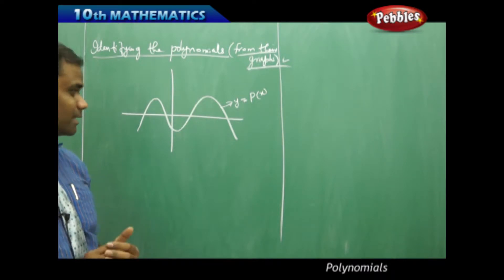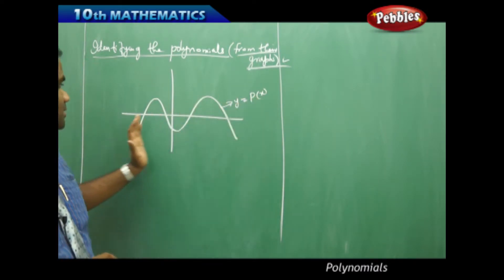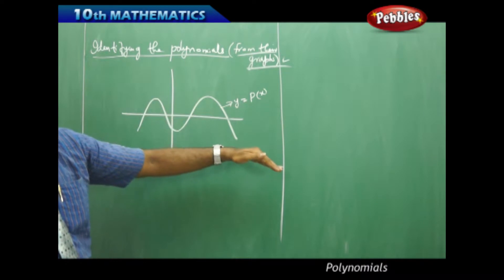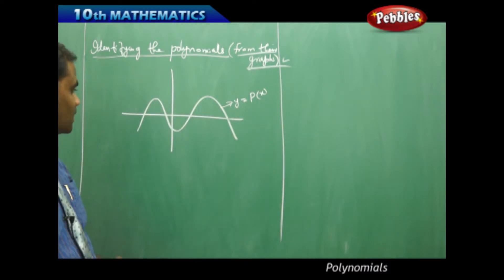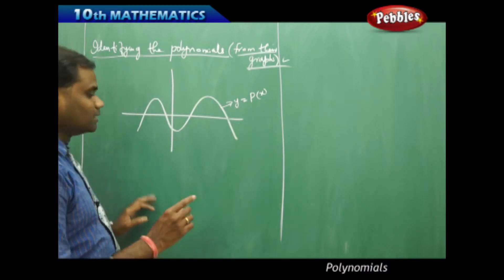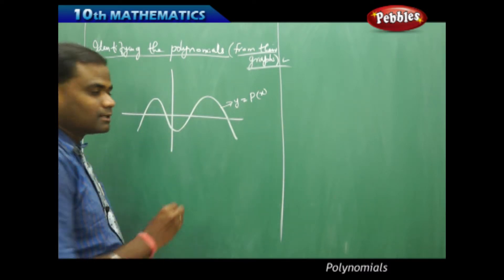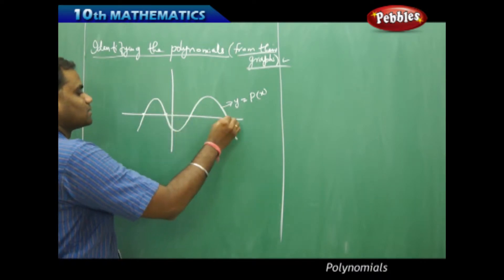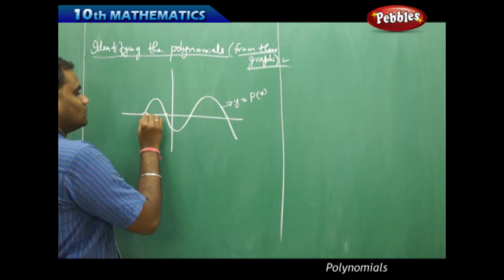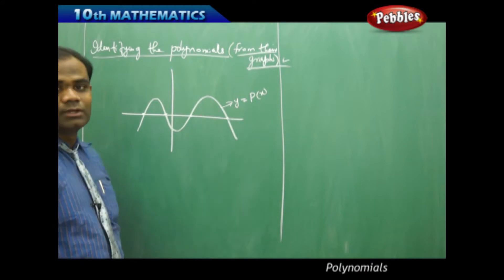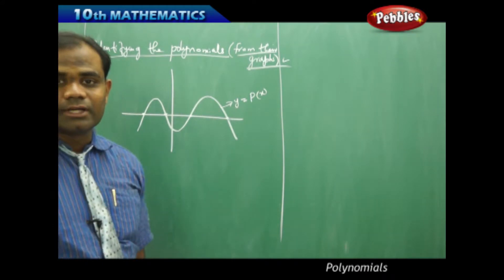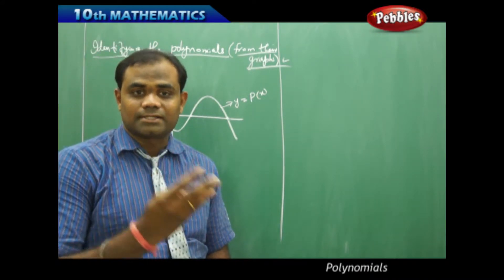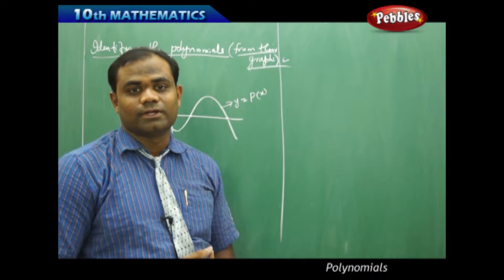This polynomial has a shape coming as an inverted W, and the graph cuts the x-axis four times — one, two, three, and four. Therefore, there are four x-intercepts for this graph.